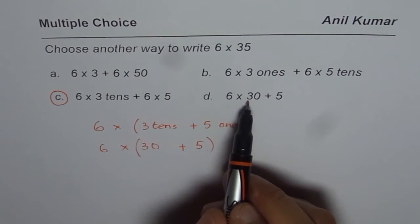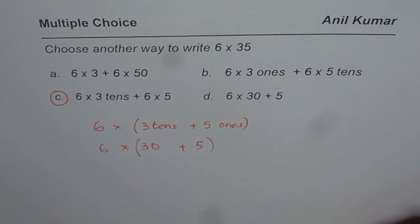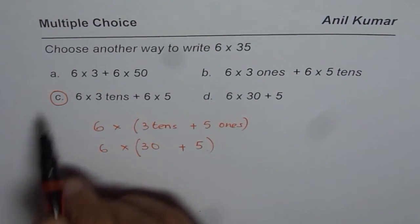The last option is 6 × 30 + 5. It should have been 6 × 5. You get the idea, right? So option C is the correct answer.